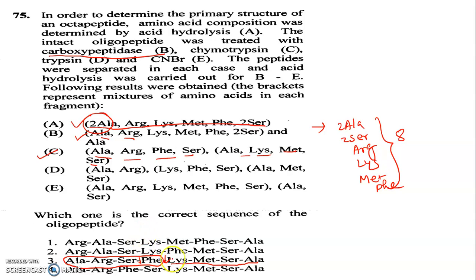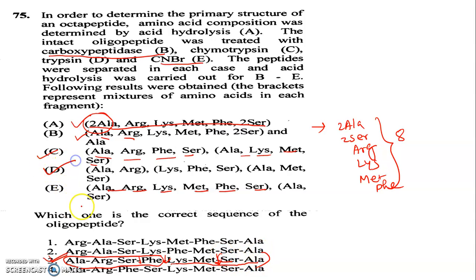Now look at CNBr. CNBr cuts at methionine C-terminal. So CNBr treatment gives: methionine, alanine, arginine, lysine — cut after methionine — then phenylalanine, serine, alanine, arginine, serine. This is also matching. D is for trypsin, which cuts at lysine and arginine. With trypsin, you find lysine and arginine positions — one each — in the sequence. Option 3 is the correct answer.